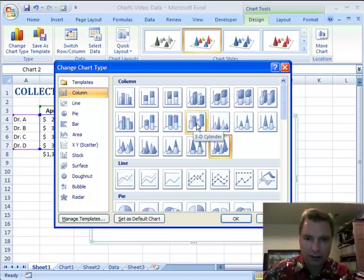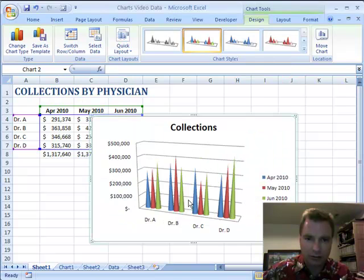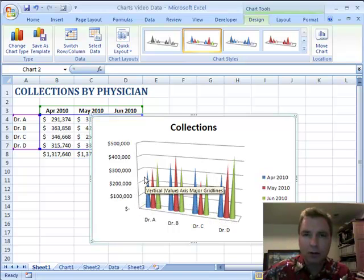Let's just pick one more. There's a 3D cylinder and this is a clustered cone like we kind of started with like that, only in a 3D variety. So there's a variety of column kind of charts you can do.